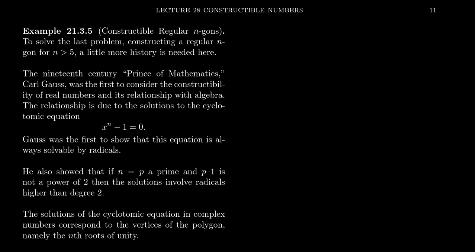The relationship is due to the solutions to the cyclotomic equation x to the n minus 1 equals 0. This is an equation we have studied previously back in Math 4220 in the previous lecture series, for which the solutions are the complex nth roots of unity.